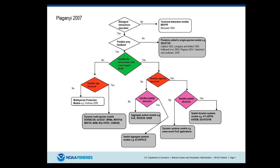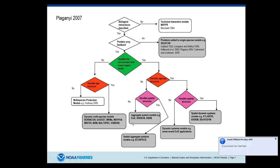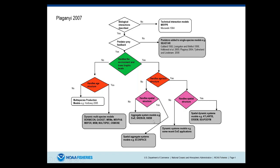Which type of model you choose is really dependent on what type of questions you want answered — no one model does everything for everyone. Starting this flow chart: do you want biological interactions, predator-prey feedback, environmental and lower trophic levels? Do you want age structure, size structure, and spatial structure? Your mass balance Ecopath-Ecosim models fall on this part of the flow diagram where you don't necessarily have spatial structure, but can handle some size structure and incorporate lower trophic levels. There is a module of EWE that allows spatial structure — Ecospace — but I won't touch on that here.